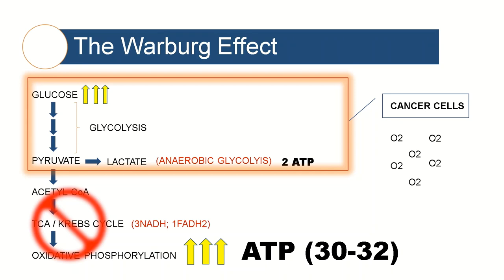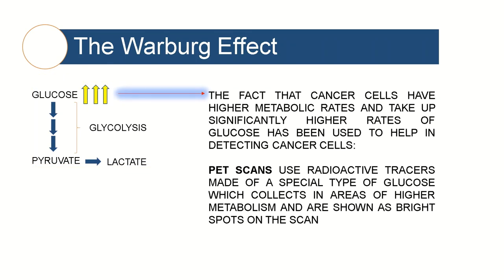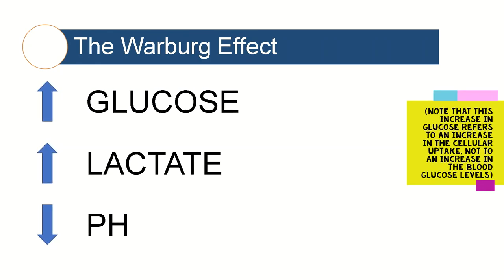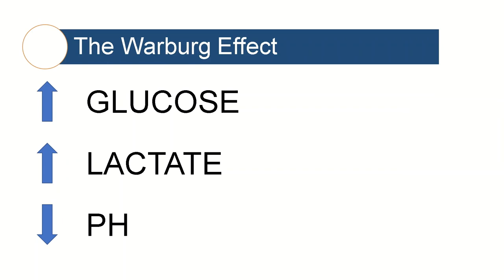This is something we will discuss shortly. Another thing to notice is that cancer cells result in a massive uptake of glucose into the cell, almost as if they are hungry for sugar. In cancer cells this pathway is known as aerobic glycolysis — the Warburg effect. Interestingly, due to the fact that cancer cells have higher metabolic rates and take up significantly higher rates of glucose, this can actually be used to help detect cancer cells. PET scans use radioactive tracers made of a special type of glucose which collects in areas of higher metabolism and shows as bright spots on the scan. Overall in cancer cells, you have massively increased glucose uptake metabolized via glycolysis rather than oxidative phosphorylation, resulting in large increases in lactate secretion. These increased levels of lactic acid can result in an acidosis, a decrease in the pH of the local microenvironment.